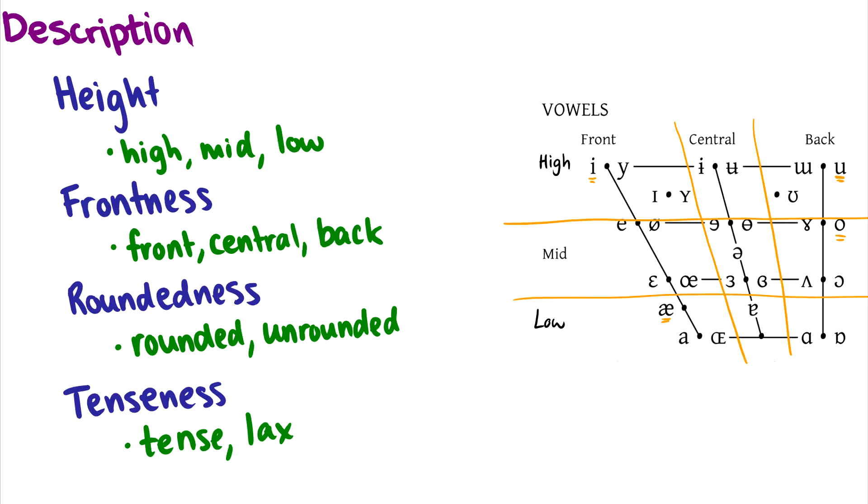Finally, the last one is tenseness. Tenseness is a little bit hard to explain. If you compare a sound like ee and i, the difference between ee and i is that ee has a lot more tenseness in it, while i has no tenseness in your tongue. So ee is tense, and i is what we call lax. Same thing with oo and uh, as in boot and book. Uh is just a lax version of oo.